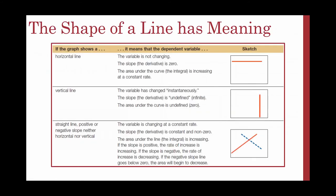Let's look at the shape of lines — line shapes have meaning. A horizontal line means the variable is not changing; the slope is zero, and the area under the curve is increasing at a constant rate. If we have a vertical line, the variable has changed instantaneously; the slope is undefined and the area under the curve is undefined and effectively zero.